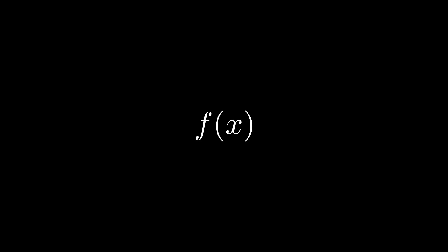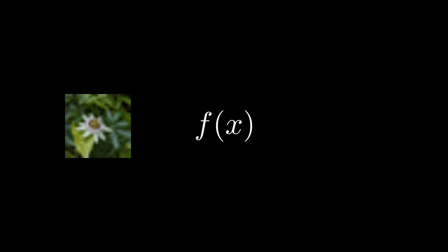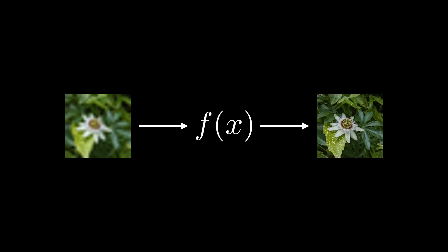Imagine approximating a function parameterised by a deep neural network. In this example, we're going to parse our network an upsampled low-resolution input image and pass it through each of the network layers. We want the network to output the input image, but now in high resolution — a task commonly known as super-resolution.